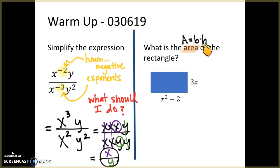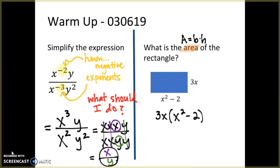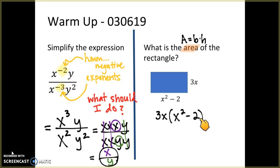For the area, we know that to find area we need to take the base multiplied by the height for a rectangle. This is the base and this is the height. You can set that up like we did in class yesterday and on Monday as well. I want to take this 3x term and distribute it to x squared and also to negative 2.